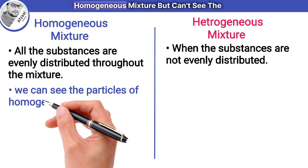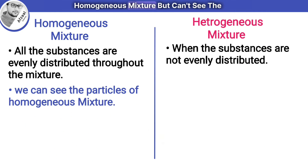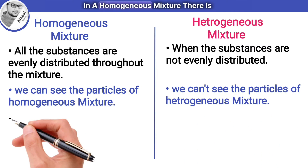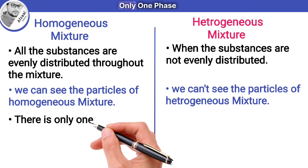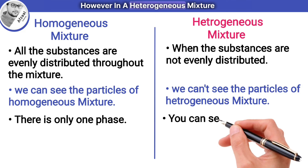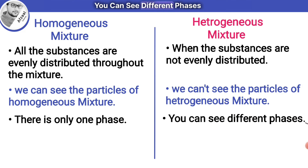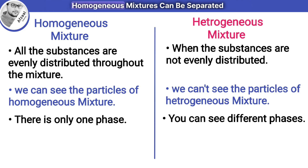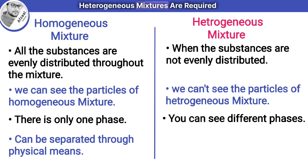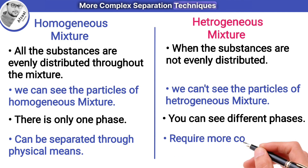We can see the particles of a homogeneous mixture but can't see the particles of a heterogeneous mixture. In a homogeneous mixture there is only one phase, meaning it looks uniform throughout. However, in a heterogeneous mixture you can see different phases or regions within it. Homogeneous mixtures can be separated through physical means, while heterogeneous mixtures require more complex separation techniques due to their uneven distribution.